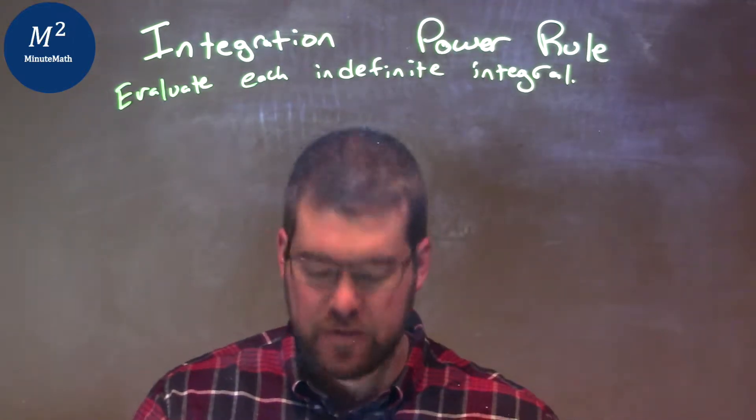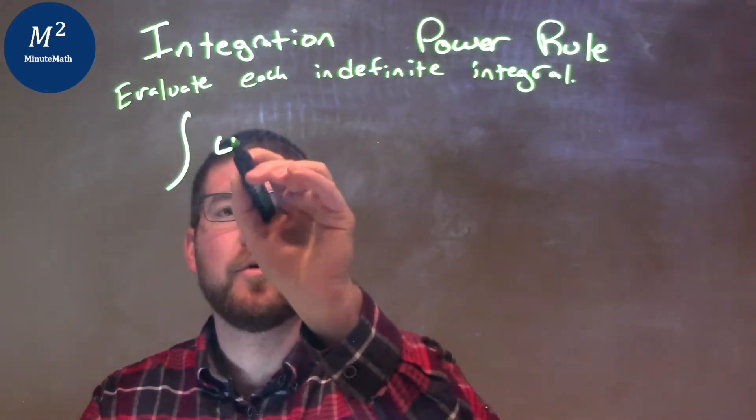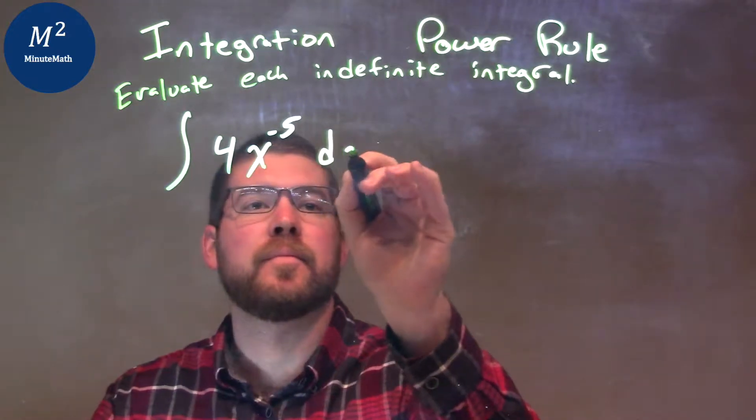So if I was given this integral, the integral of 4x to the negative 5th power dx.